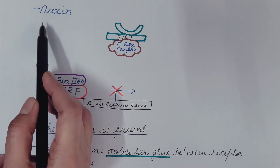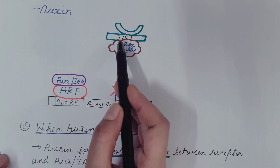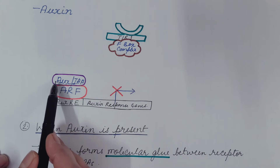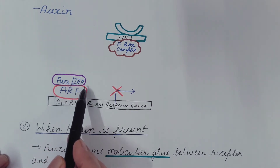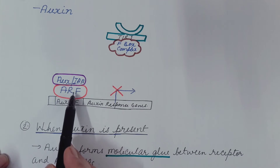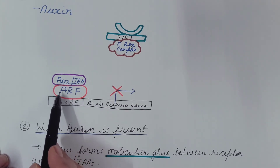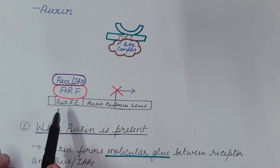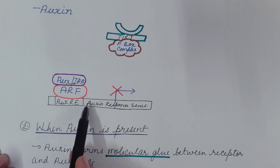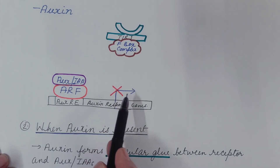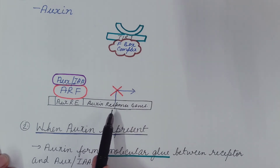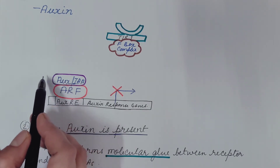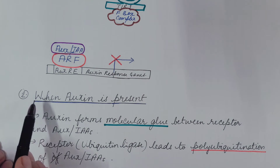Let us understand this with the help of a figure. Auxin is absent, so auxin doesn't bind to the receptor. The inhibitor AUX/IAA comes and binds with ARF, suppressing the activity of the transcription factor. As a result, the auxin response gene is not transcribed and we say that auxin signaling is off. Here, AUX/IAA and ARF form a heterodimer.